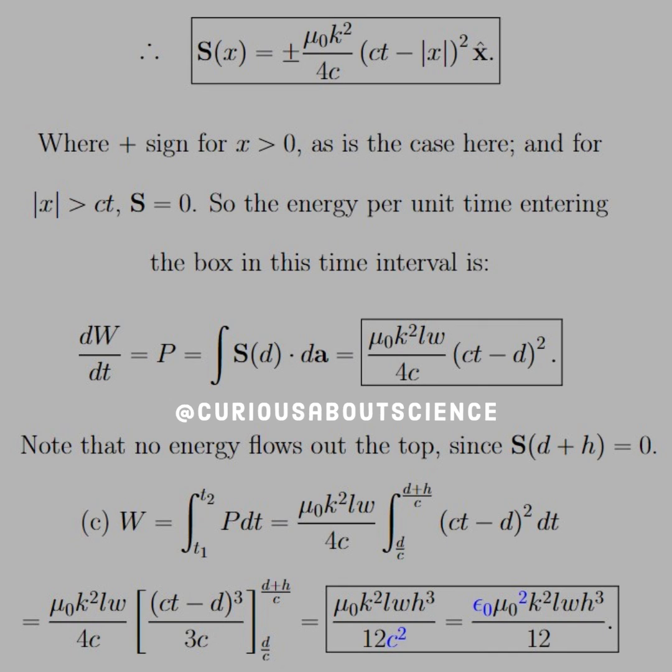So, again, here, plus for X greater than 0, and as is the case here, and for the absolute value of X greater than S times T, the Poynting vector is 0, since we don't have any fields there. Similar stuff.